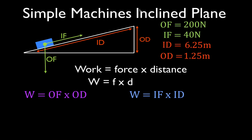So, let's go through this and calculate the amount of work both ways. So, we said the work is equal to the output force times the output distance. So, that means that the work is output force times output distance, which is 200 newtons times 1.25 meters.